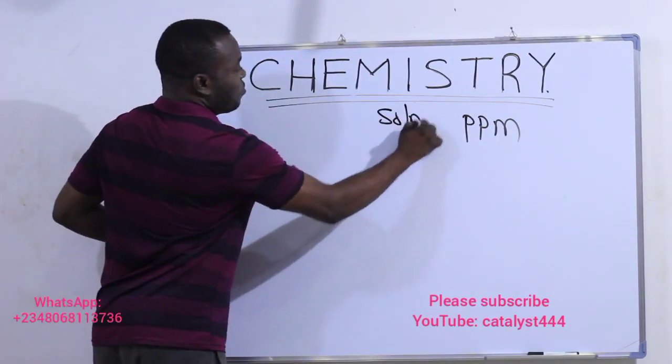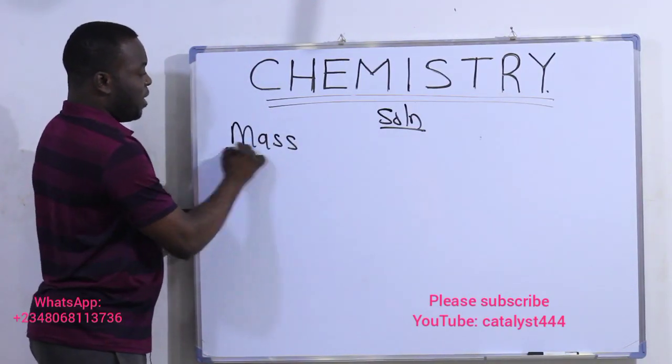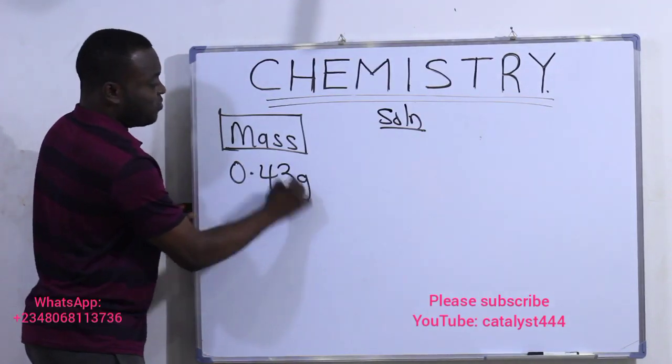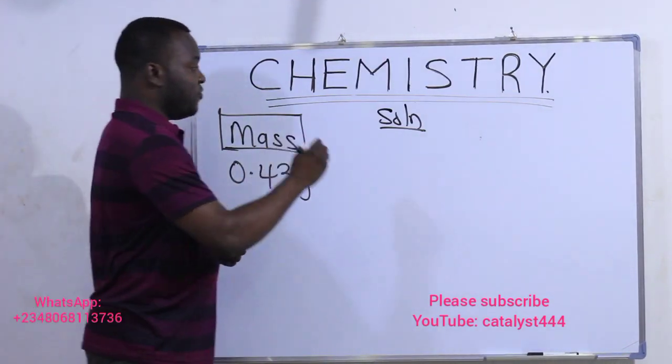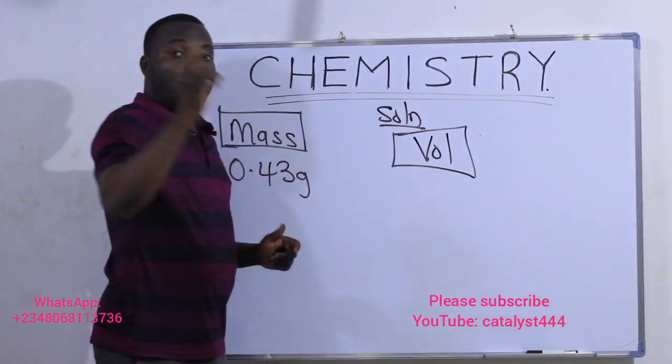Solution. Bring out the mass given to you. That is here. They gave us mass, and the mass is given as 0.43 grams. Bring out the volume given to you. We'll put the volume here. And the volume given to us is one liter.